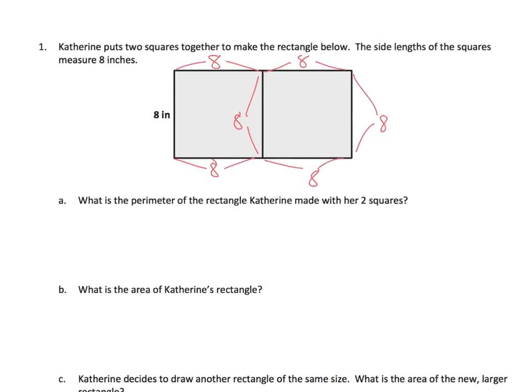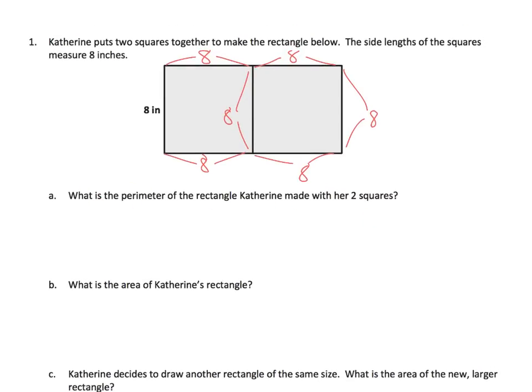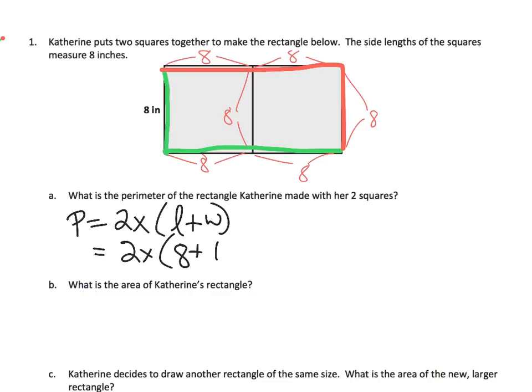The question is, what is the perimeter of this rectangle that Katherine has made? Remember, perimeter is that distance around the entire figure, so it's going to be 8 plus 16, and then we're going to double it because of course we have another 8 plus 16 on the other side. So if we wanted to mathematize that, we would say the perimeter is 2 times the length plus the width. So that's 2 times 8 plus 16. That's going to be 2 times 24, which is 48. So it's 48 inches.